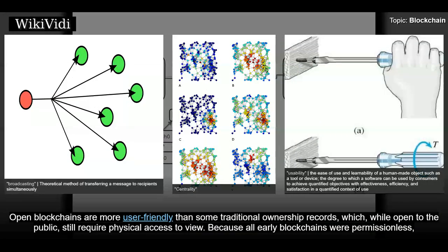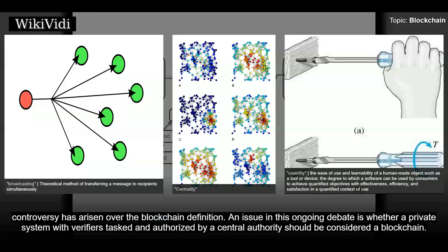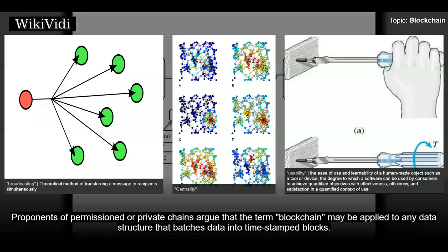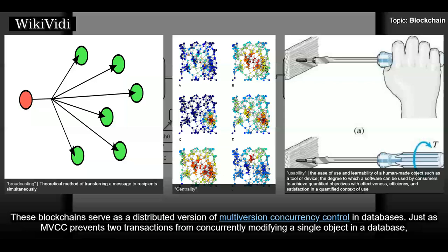Open blockchains are more user-friendly than some traditional ownership records, which, while open to the public, still require physical access to view. Because all early blockchains were permissionless, controversy has arisen over the blockchain definition. An issue in this ongoing debate is whether a private system with verifiers tasked and authorized by a central authority should be considered a blockchain. Proponents of permissioned or private chains argue that the term blockchain may be applied to any data structure that batches data into timestamped blocks. These blockchains serve as a distributed version of multi-version concurrency control in databases.